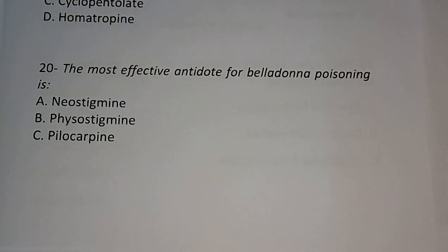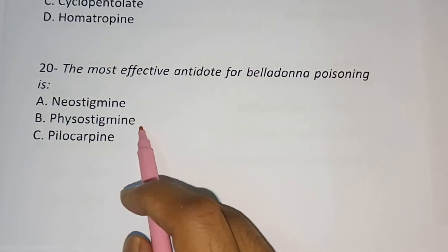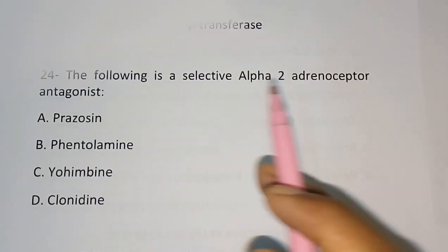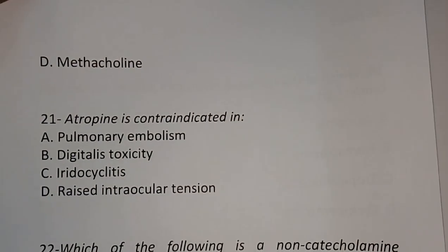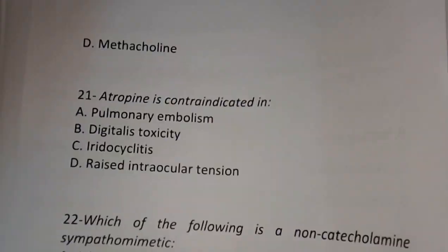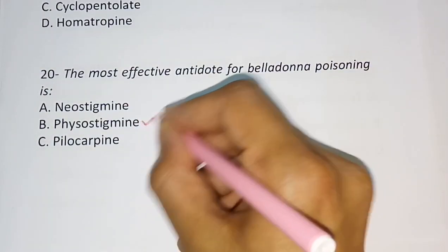Question number twenty: The most effective antidote for belladonna poisoning — (A) neostigmine, (B) physostigmine, (C) pilocarpine, (D) methacholine. The correct answer is physostigmine.